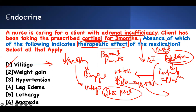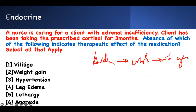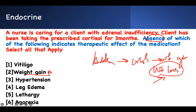When you have Addison's, patients don't have weight gain — they have weight loss, because they lack cortisol. Weight gain is a side effect of steroids. So absence of weight gain is not the right indicator here, because they don't have weight gain to begin with. When you give them cortisol, the weight loss will go away — they may rather gain weight. So weight loss will be absent, but the question asks about absence indicating therapeutic effect.